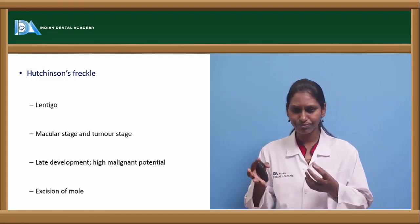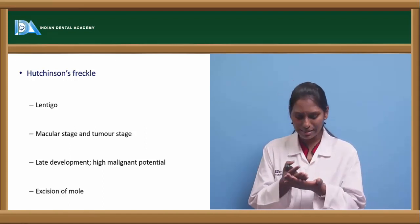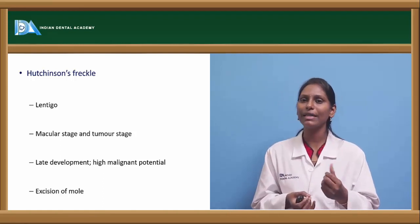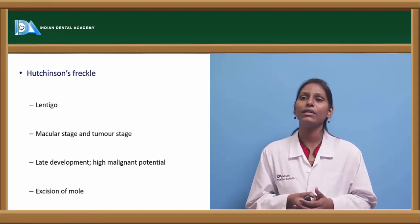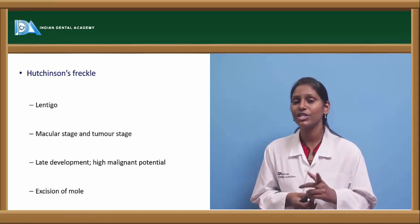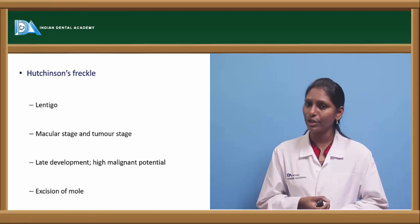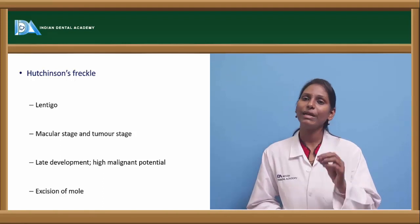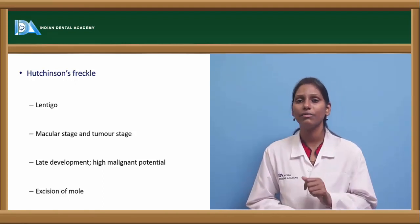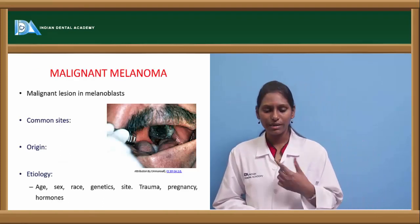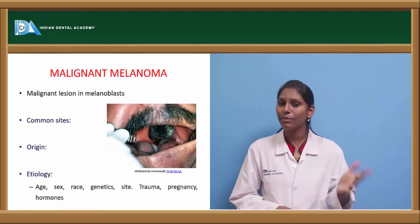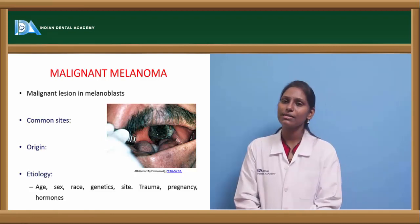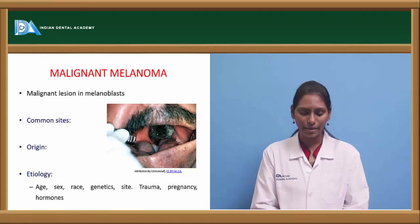Hutchinson's freckle, also called lentigo maligna, can present as a macular or tumoral stage — as a flat patch or as a growth. It can be warty or smooth. Hutchinson's freckle has a high malignant potential and can turn into lentigo maligna melanoma, though it is slow-growing and develops late. Whenever this freckle is seen, excise it to prevent malignant transformation.